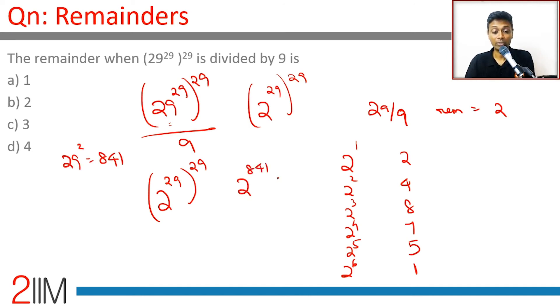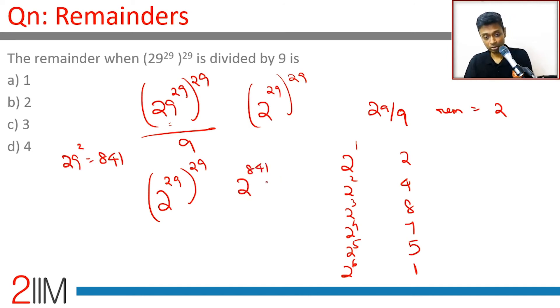What is the remainder? Think about this: 2^6 gives a remainder of 1, so 2^12 will give a remainder of 1. 2^6 to any power will give a remainder of 1. Near 841, 840 is a multiple of 6.